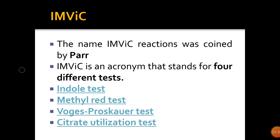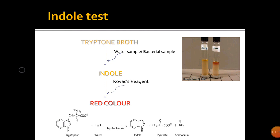IMViC is an acronym that stands for four different tests: the Indole test, Methyl Red test, Voges-Proskauer test, and Citrate test. First, we will discuss the Indole test. The Indole test is used to determine the ability of an organism to split the amino acid tryptophan to form the compound indole. Tryptophan is used in tryptone broth when a water sample or bacterial sample is added.